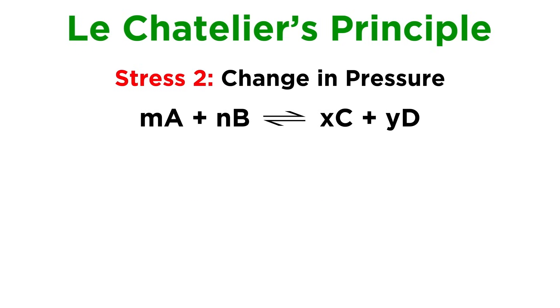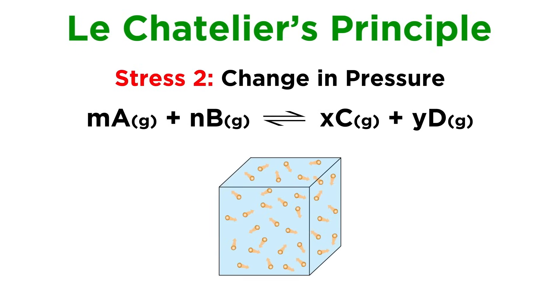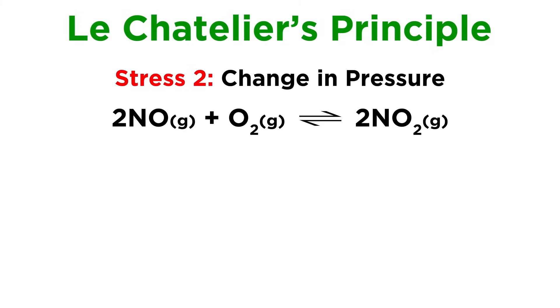The second type of stress involves a change in pressure for the system. If the equilibrium involves gases, a change in pressure could have a substantial effect, provided that the forward and reverse reactions may change the number of gaseous particles in the system. This can be discerned from the balanced chemical equation. Let's say we are looking at the following equilibrium. There are three moles of gaseous particles on the left and two moles on the right.